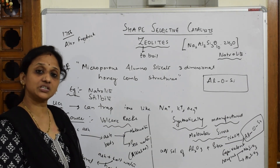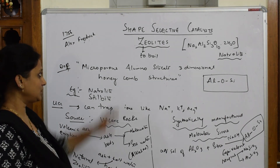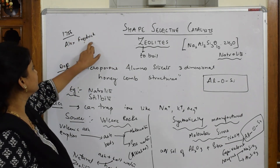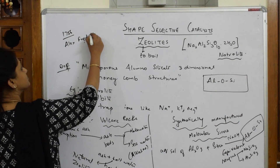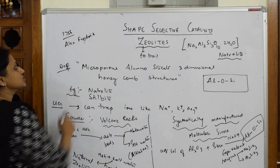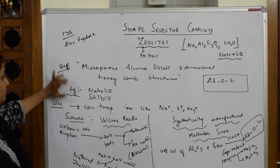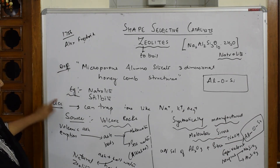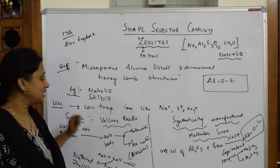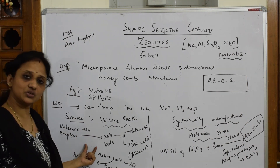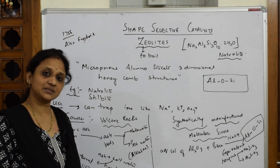In summary, Axel Fredrik introduced the term zeolite in 1756. The topics covered include the introduction, definition, examples, ion-trapping properties, uses, and the sources — both natural volcanic rocks and synthetic preparation.